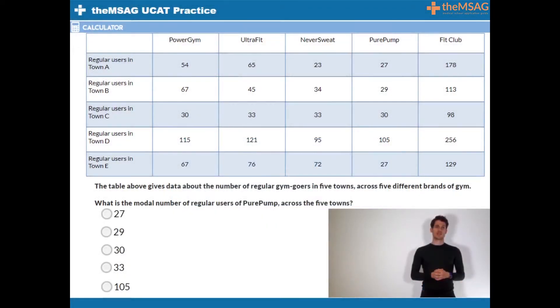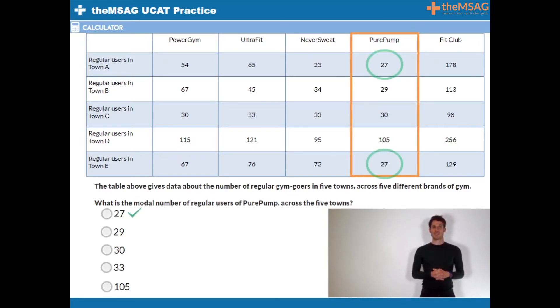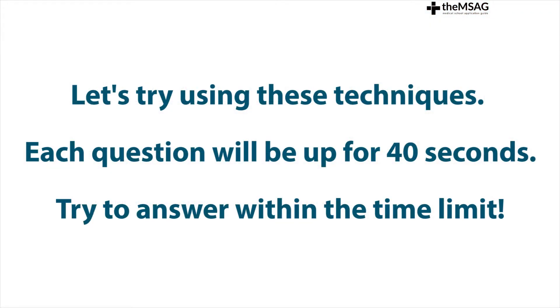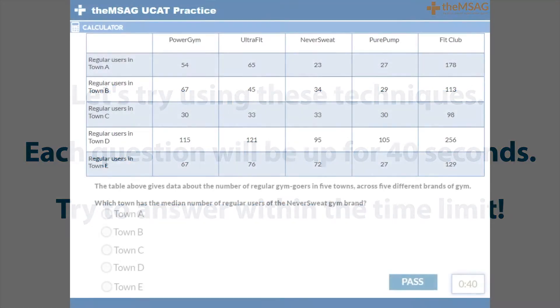The answer is A. The number that appears most frequently in Pure Pump's column is 27, as it appears twice. Now try these three questions to further test your ability to find medians and means from a table.